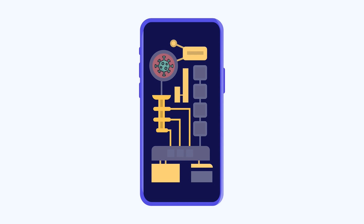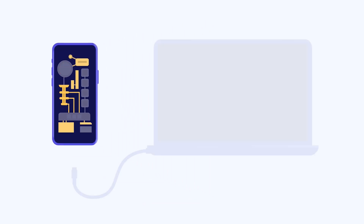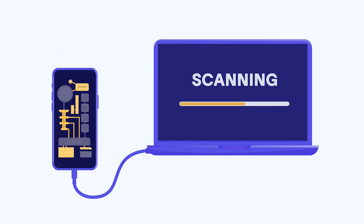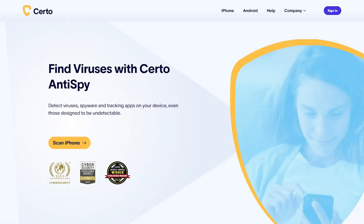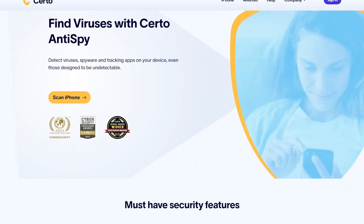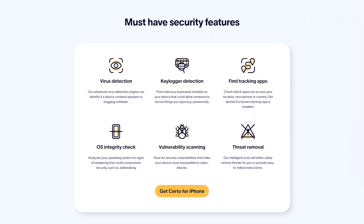As a result, these apps can't perform a full scan and might miss most viruses. To thoroughly scan your iPhone, you need to use antivirus tools that can connect your phone to a computer to run the scan. This is by far the most effective way to detect viruses on an iPhone because it allows the antivirus software to access the necessary areas of your device.